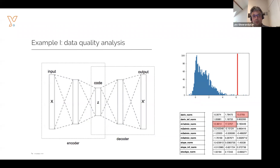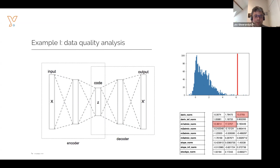I would like to start our exploration of machine learning techniques in the context of model risk management by focusing on data. Typically in a validation exercise, up to 80% of all the time is spent on data issues. So being able to quickly evaluate the quality of a data set and quickly spot outliers or anomalies is extremely important. A very powerful algorithm often used in the context of outlier detection is what we call an autoencoder.